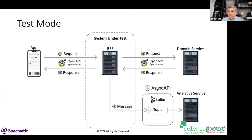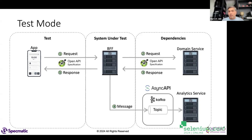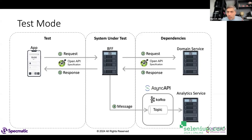The app itself becomes a test driver; I'll stub out the domain service and Kafka so I can test the BFF under all different conditions and ensure it's resilient. By doing this I can inject faults — which are now under my control — and see if the BFF handles them gracefully. I can also give it all kinds of boundary case inputs.